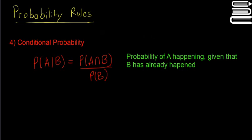This P of A kind of slash B means the probability of A happening, given that B has already happened. I think I have a misspelled there, there should be two P's, but anyway. Yes, the probability of A happening, given that B has already happened.